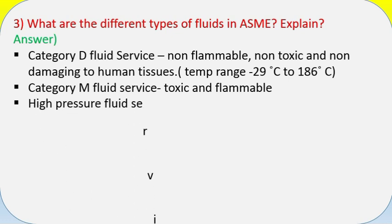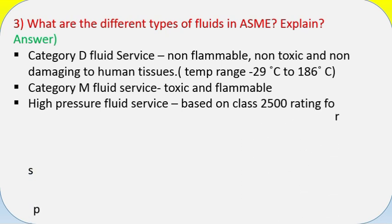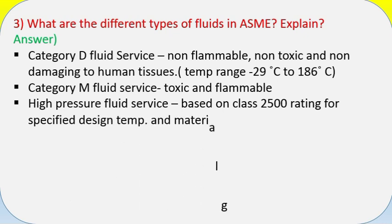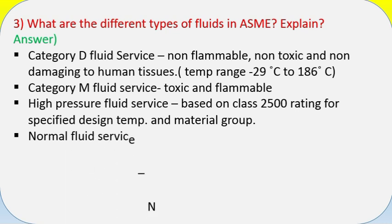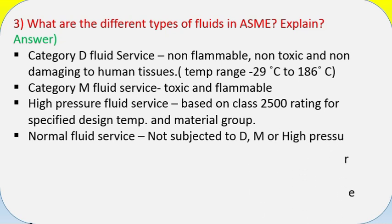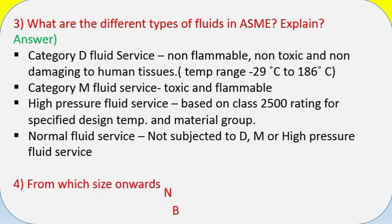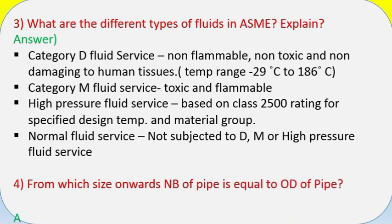Question 3: What are the different types of fluids in ASME? Answer: Category D fluid service — non-flammable, non-toxic, and non-damaging to human tissues, temp range -29°C to 186°C. Category M fluid service — toxic and flammable. High pressure fluid service — based on Class 2500 rating for specified design temp and material group. Normal fluid service — not subjected to D, M, or high pressure fluid service.